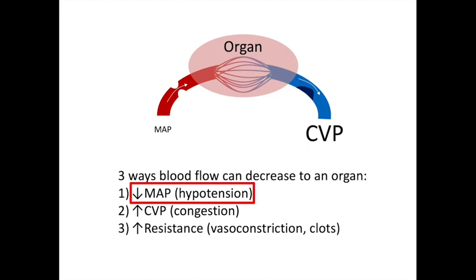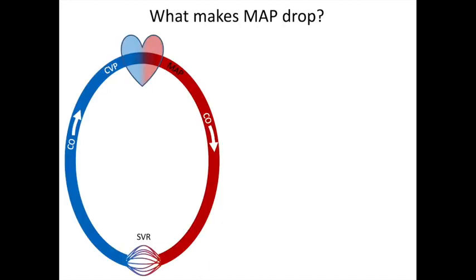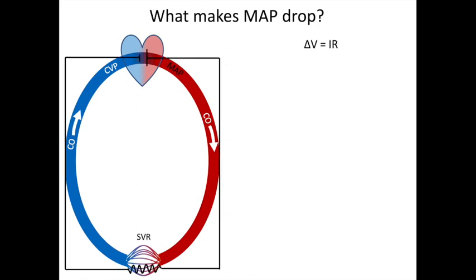This lecture focuses on hypotension because generally most patients we see in shock are hypotensive. If you think of the circulatory system as a simple circuit diagram with pressure as MAP minus CVP, flow as cardiac output, and resistance as SVR or systemic vascular resistance, you can apply Ohm's law: pressure equals flow times resistance. So MAP minus CVP equals cardiac output times systemic vascular resistance. Any drop in MAP is either from a drop in cardiac output, a drop in SVR, or both.